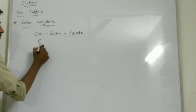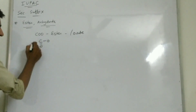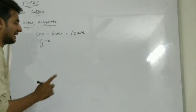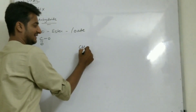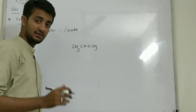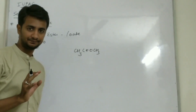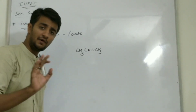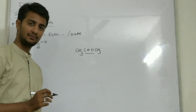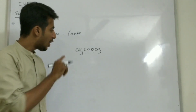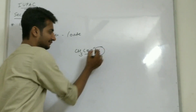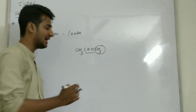Ester can be written as C double bond O and O. Whenever ester is there, you have to do the nomenclature like this. First of all, you can see that the C double O group is here. You have to see on the right side of C double O how many carbons are there. Here only one carbon is there.